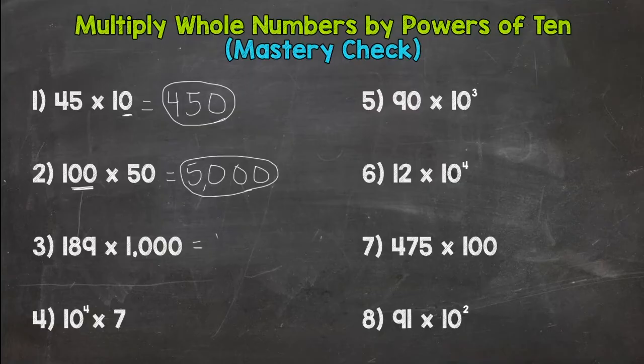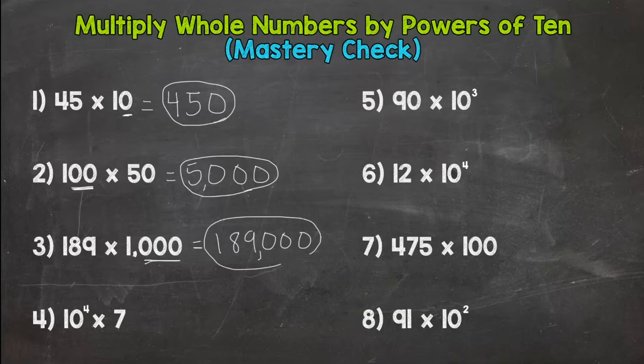Number three, we have 189 with an additional three zeros. 189,000.